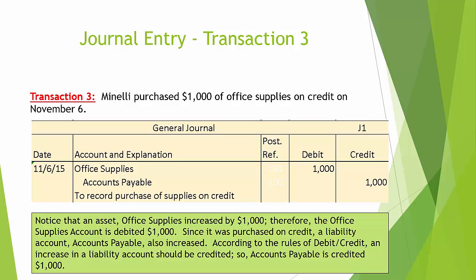Transaction number 3: Minnelli purchased $1,000 of office supplies on credit on November 6. Notice that an asset, office supplies, increased by $1,000; therefore, the office supplies account is debited $1,000. Since it was purchased on credit, a liability account — accounts payable — is also increased. According to the rules of debit and credit, an increase in a liability account should be credited. So, accounts payable is credited $1,000.